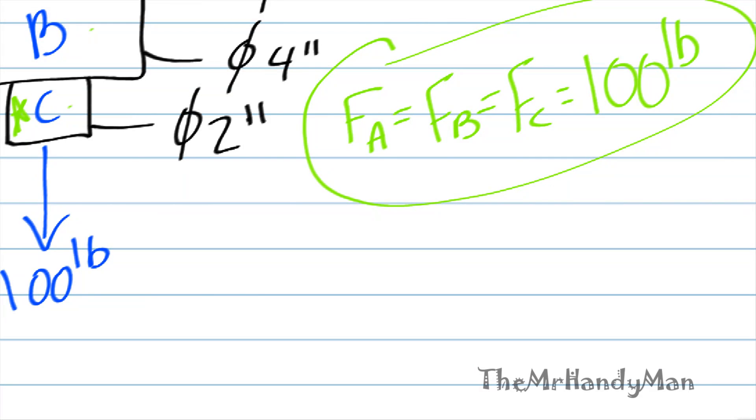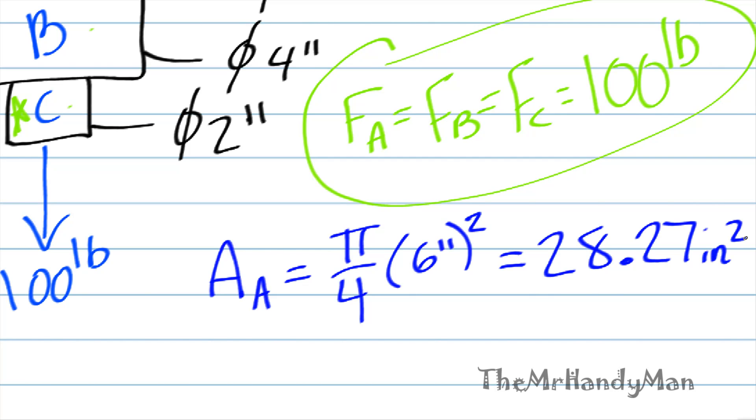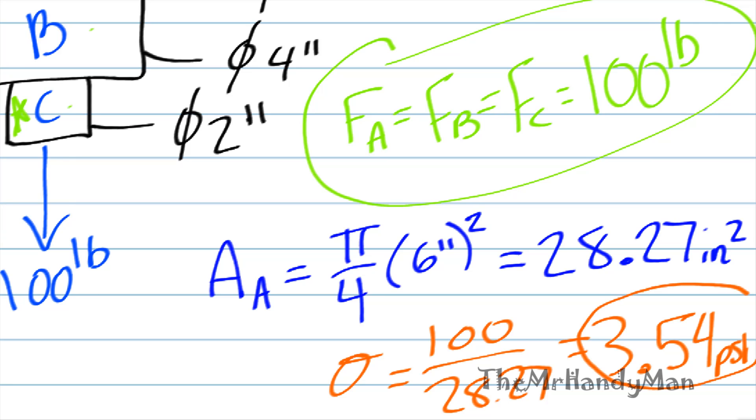Let's start off with A. If I were to look at the surface area, the area of A, it's going to be pi over four diameter squared, which will be six inches squared. Just solving that for us, it's going to be about 28.27 inches squared. And if I calculate this for us, equals 100 over 28.27, which equals about 3.54 psi, pounds per square inch. So this is your stress at A, tensile stress.